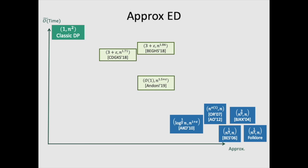These parameters were subsequently improved, both in the approximation and in the running time, but all of these required at least n to the 1.5 running time.